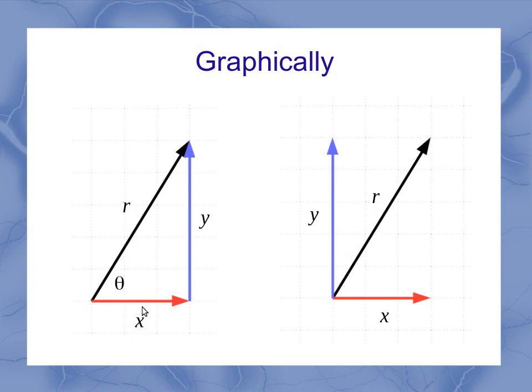Graphically, this represents a basic trigonometric triangle. x and y are the components of the vector. r, the length of the vector, is the hypotenuse. And the angle theta is measured up from the positive x-axis going counterclockwise.